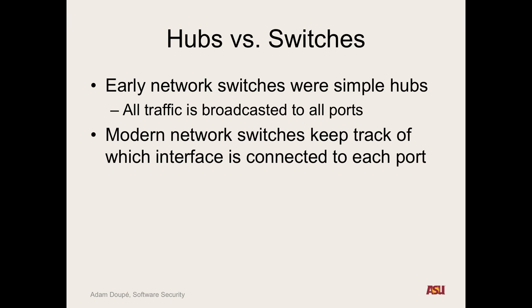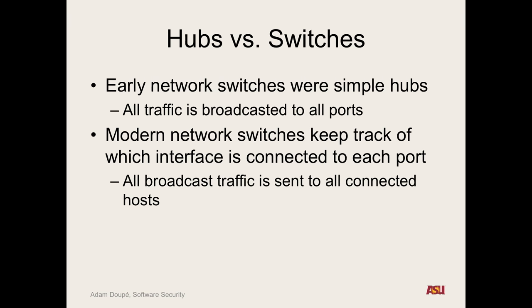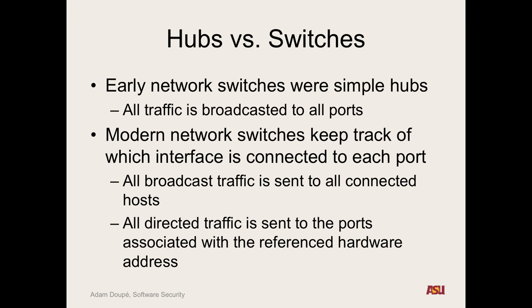Modern switches bring it up a little bit — they're a little bit more intelligent. The idea is they're keeping track of what MAC addresses are coming from which ports. And that way, when they get an Ethernet packet that says this is a packet to a certain MAC address, they know exactly which port to send it out of. So they're continually updating their tables — the switch keeps track of MAC addresses to ports. But the important thing to remember — all broadcast traffic is sent to all connected hosts on a switch no matter what, because that's the point. Directing traffic is targeted specifically to an individual port that it's seen a packet coming from that network. There can be multiple MAC addresses associated with each port.